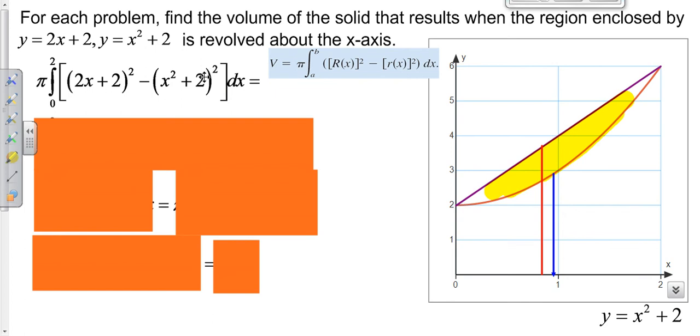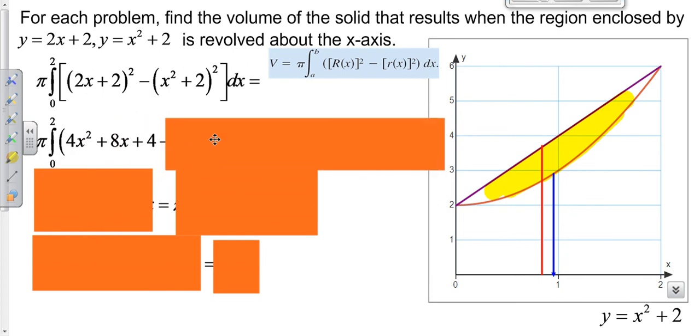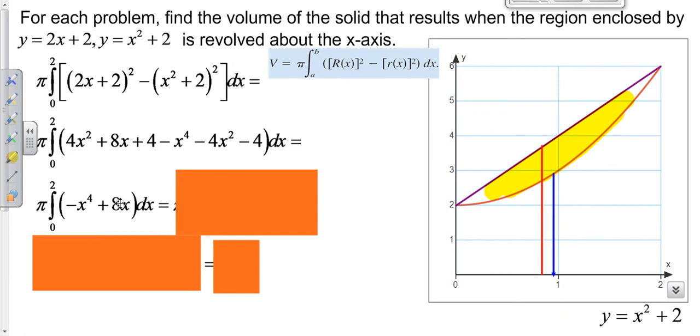Now we have our outer radius squared minus our inner radius squared, and we need to integrate that from 0 to 2. We're going to FOIL this out, minus what we get when we FOIL that out. Then we can combine some like terms.